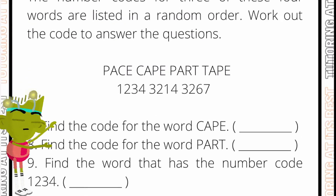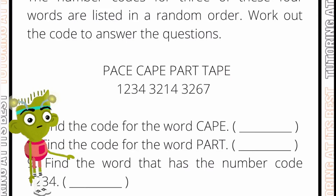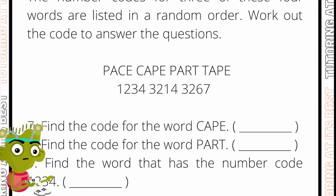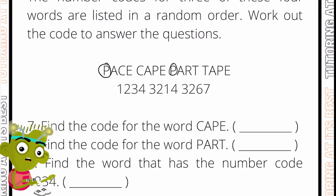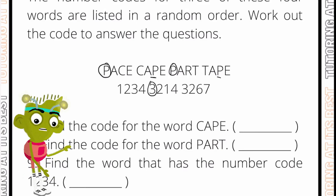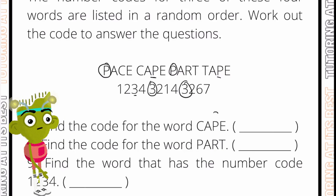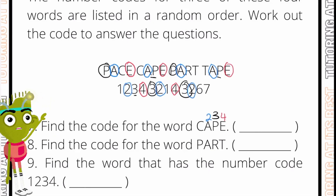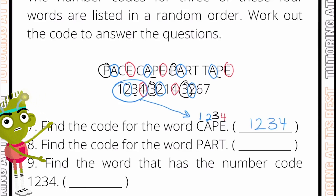We have four words and three numbers, working with numbers 1 to 7. Let's start with the more common letters. P comes up in the first and third positions, and 3 also comes in the first and third positions — so P equals 3. E comes last in many positions and 4 also comes last — so E equals 4. A comes in the second position almost every time, and 2 is also in the second position — so A equals 2. That leaves C as 1, giving us the code 1234 for 'cape'.